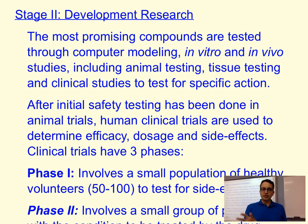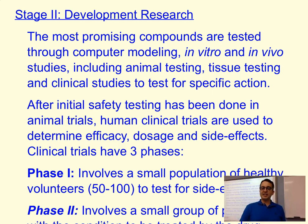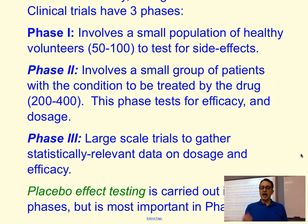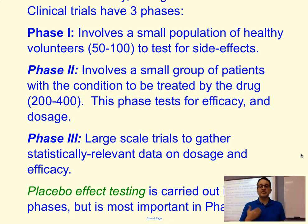After initial safety testing in animal trials, we move into human clinical trials. These are done in three phases and determine efficacy, dosage, and side effects. Phase one is done on healthy volunteers, and the only reason we do that testing is to see if there are any side effects. You do not want to give a medicine to somebody who is in poor health that will cause even worse side effects. We do this on a healthy population after the drug has been tested for safety in prior trials.